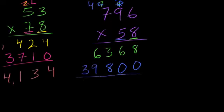5 times 7 is 35 plus 4 is 39. Now we're ready to add. 8 plus 0 is 8, 6 plus 0 is 6, 3 plus 8 is 11. 1 plus 6 is 7, 7 plus 9 is 16. Then 1 plus 3 is 4. So 796 times 58 is 46,168.